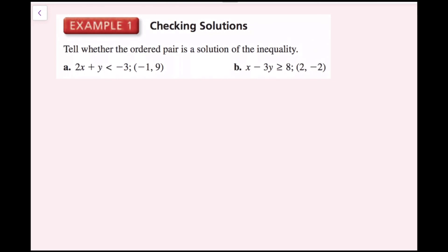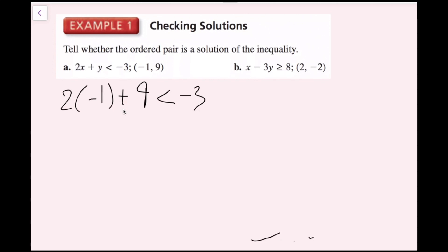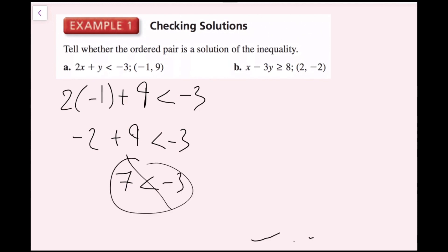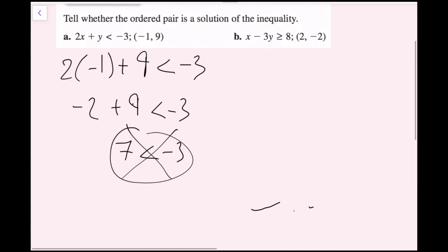For this example, we're going to tell whether the ordered pair is a solution of the inequality. We have an ordered pair with our x and y coordinates, so we're going to plug them in. I'm going to plug in negative 1 for x and 9 for y. So I get 2 times negative 1 plus 9 is less than negative 3. I get negative 2 plus 9 is less than negative 3, and that becomes 7 is less than negative 3. This is not true, so this point is not a solution.